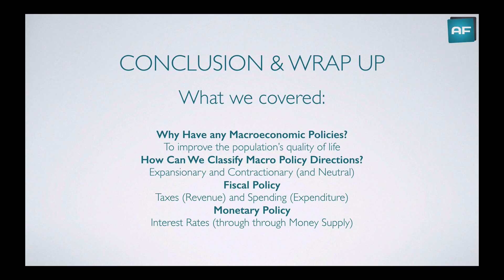So what did we cover today? We explained why we have macroeconomic policies — to improve the population's quality of life, specifically employment, stable prices, and the general well-being of the community. We covered how to classify macro policy directions as expansionary, contractionary, and neutral. We covered fiscal policy, which is taxes and spending — revenue and expenditure — and monetary policy, which affects economic activity through altering interest rates via the money supply.